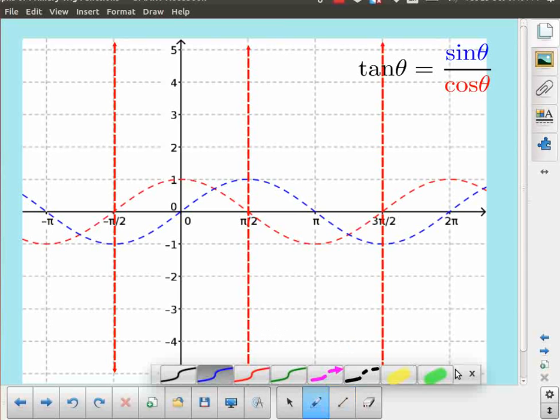Then I'll switch over to blue for sine. Where is sine equal to zero? Sine is equal to zero here. And sine is equal to zero here. And sine is equal to zero here. And over here.